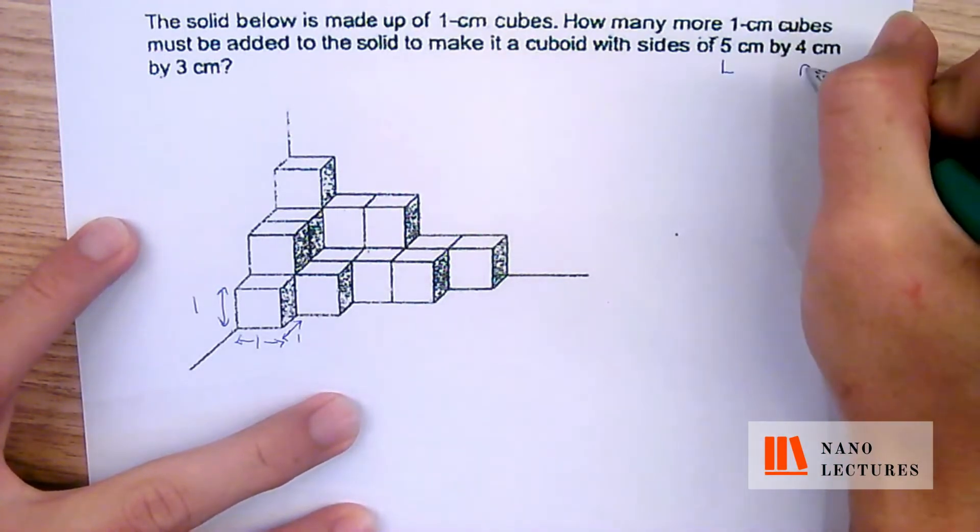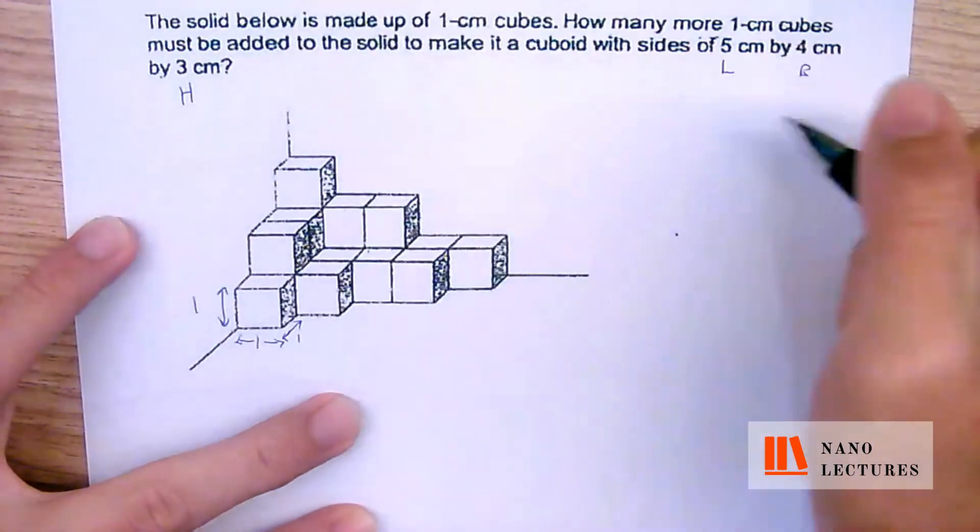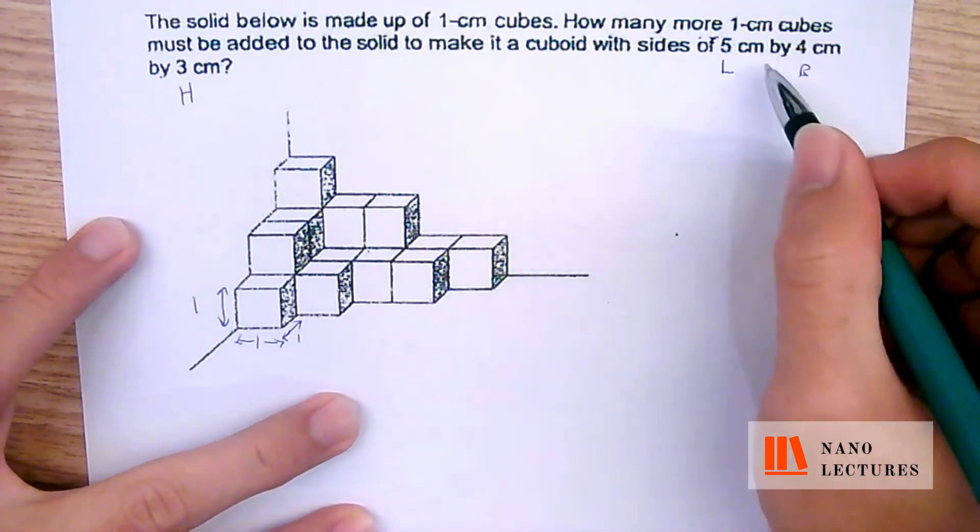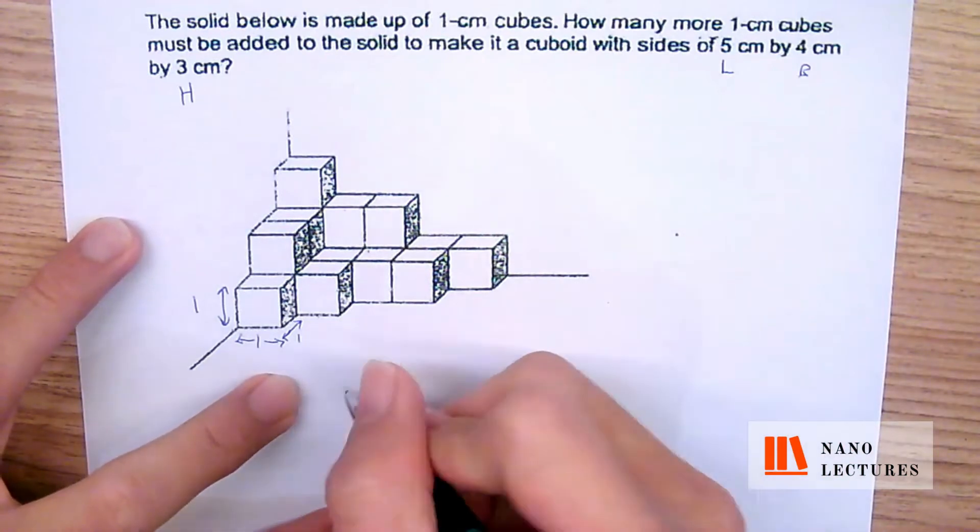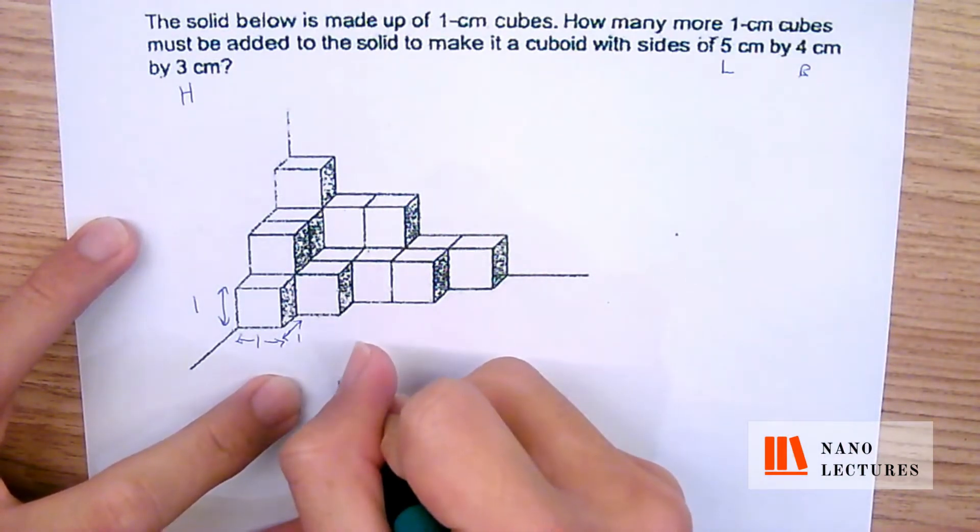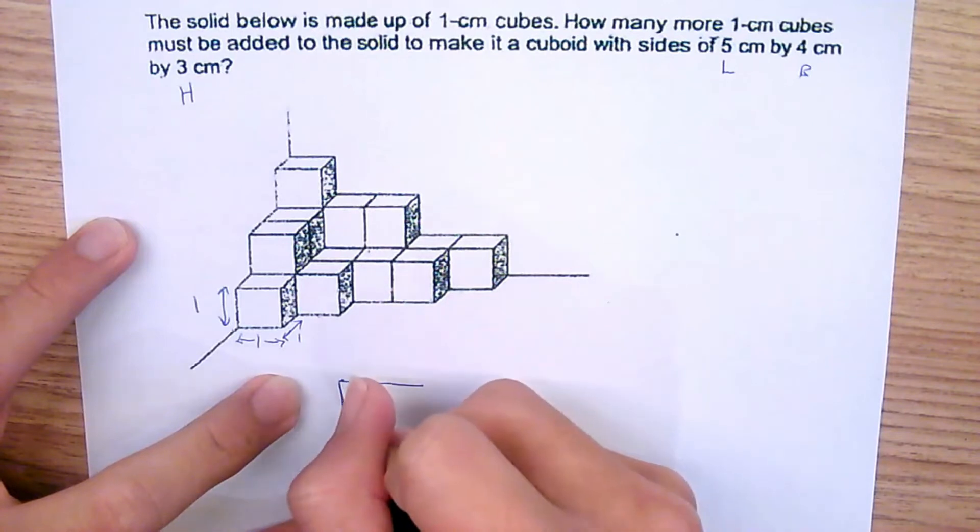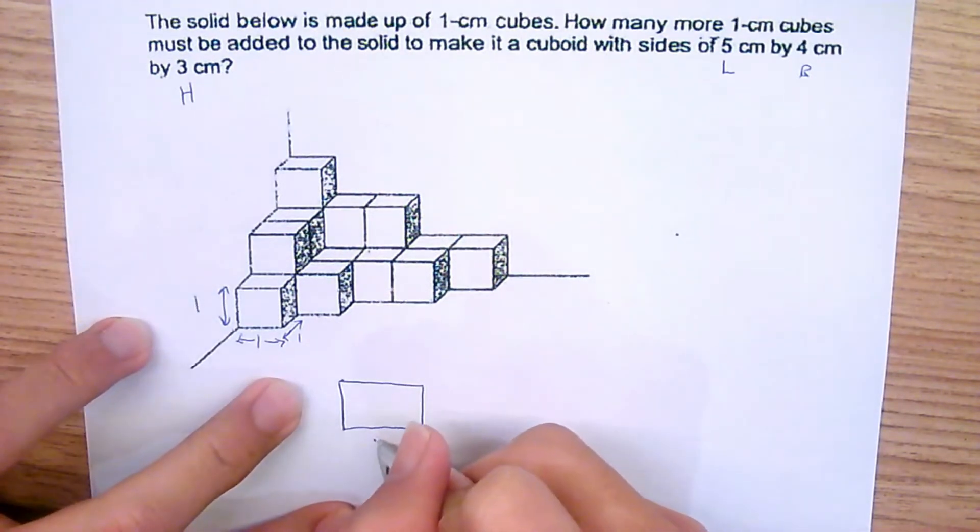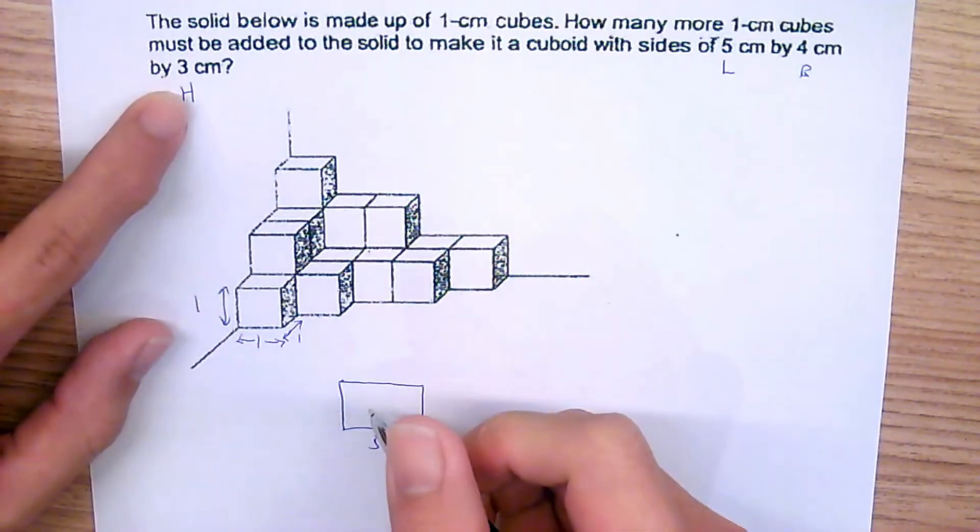First we're going to draw a rectangle. The rectangle should be the part that is facing you, so what we're drawing here will be the length. This length will be 5cm and this must be the height, not the breadth.